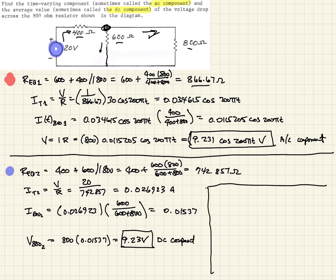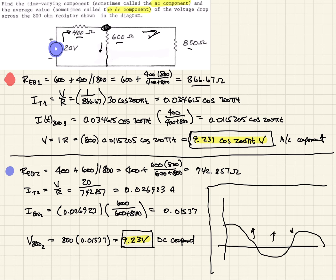The total voltage drop is the sum of these two components. The AC component gives us the cosine wave, and the DC component shifts it upward — so instead of the cosine wave centered at zero, it's offset up by 9.23 volts. That's how we solve for both the AC and DC components using superposition.